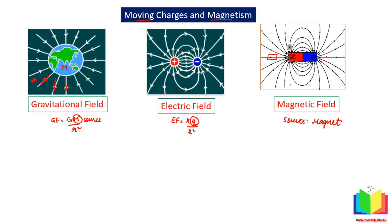This magnetic field is used in the form of a compass needle. A compass needle is a magnet in the form of a needle and is an instrument to show the direction of the net magnetic field. It will always align along the magnetic field, and if we have another magnet nearby, the needle will show deflection.